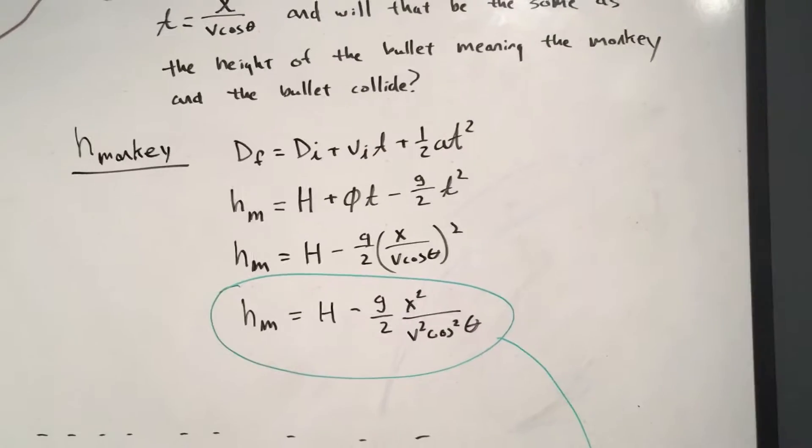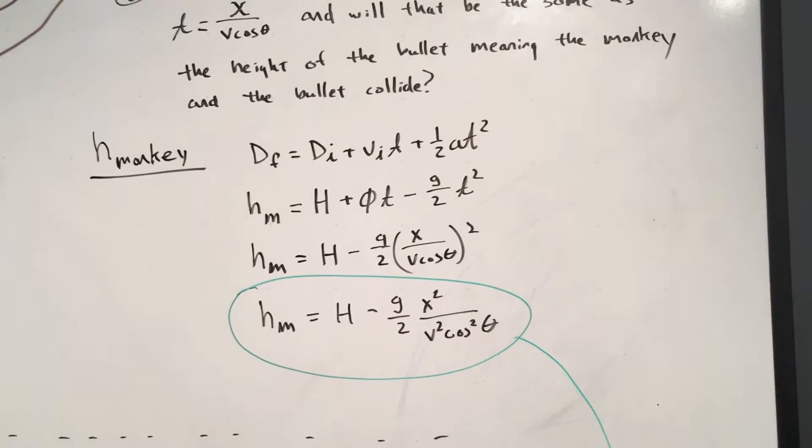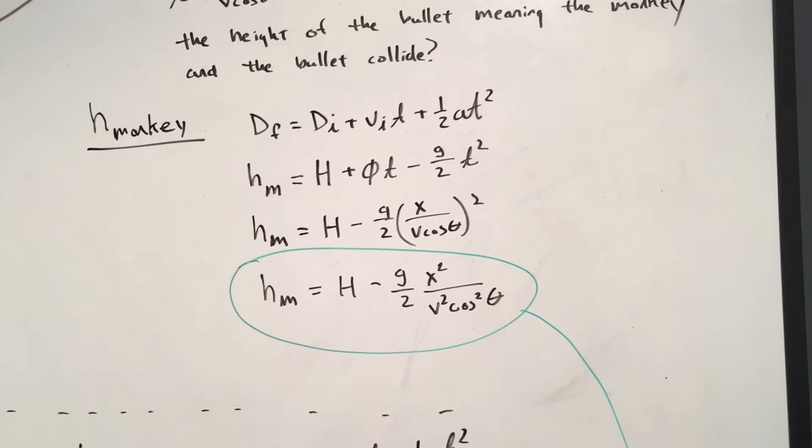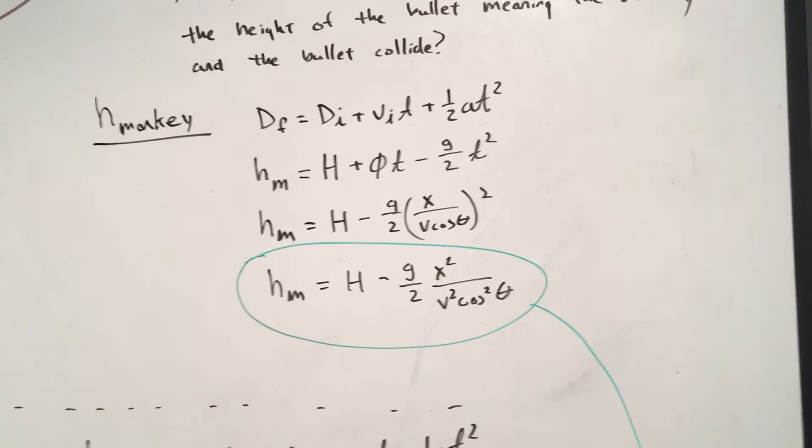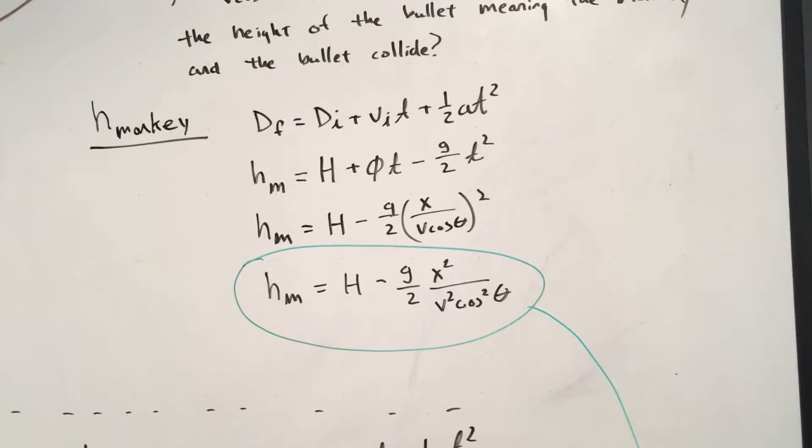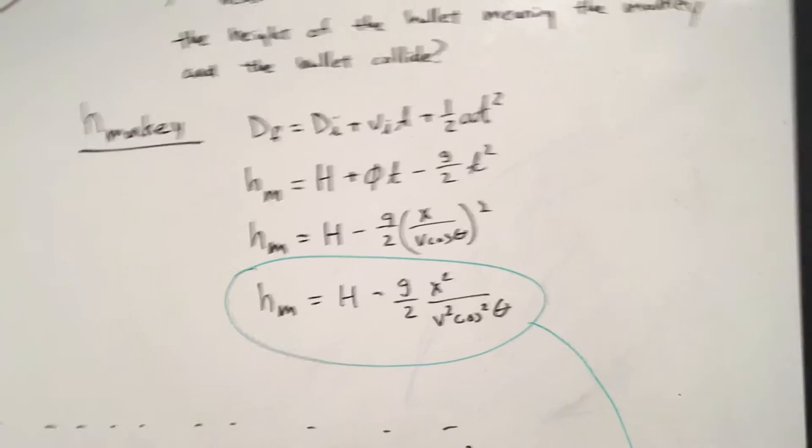So basically substitute in X over V cosine theta for t squared. And you get height of the monkey is his original height, minus g over 2 X squared over V squared cosine squared theta. So that's the height of the monkey.